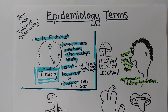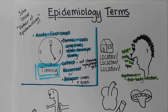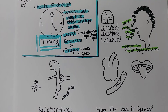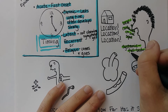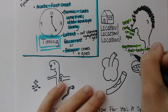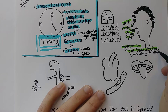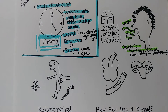On the other hand, systemic doesn't always mean something scary. If you have the flu, you have a systemic infection — your whole body is affected, but most people recover just fine. Systemic can also mean the infection or inflammation is circulating in the bloodstream.